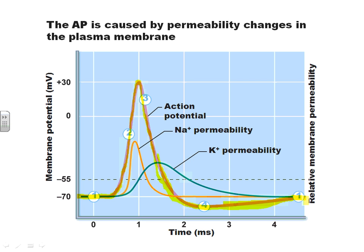For an action potential to occur, we have to make the inside go from negative to positive. Looking at the graph — where is it impossible to start a new action potential? To have an action potential, we need to depolarize, going from negative to positive. The only place you absolutely cannot have an action potential is when the inside is already positive. If the inside is already positive, you can't make it positive. This is the area we call the absolute refractory period.